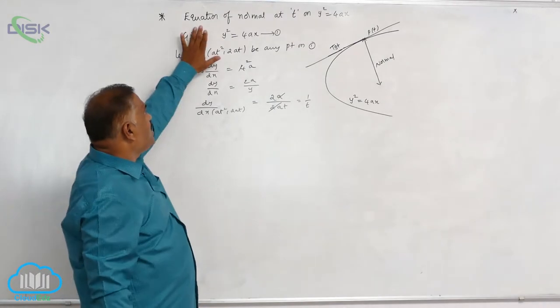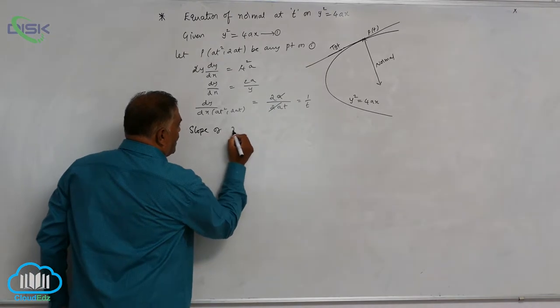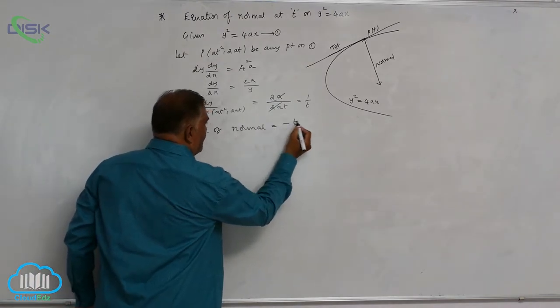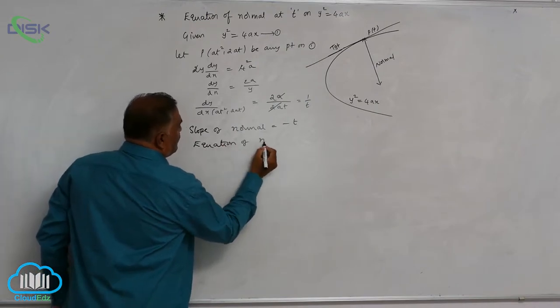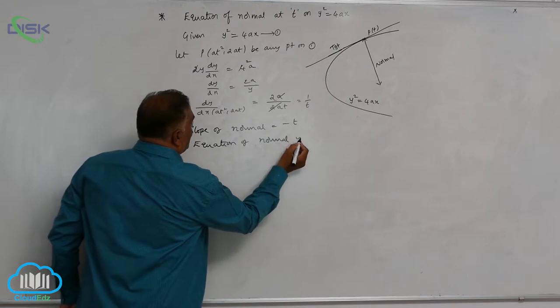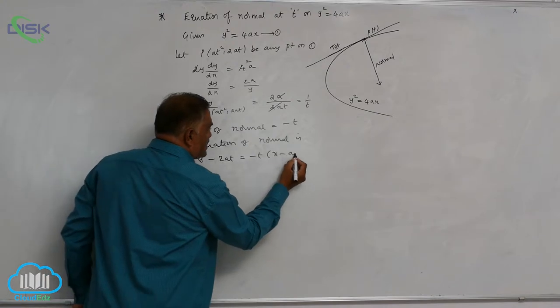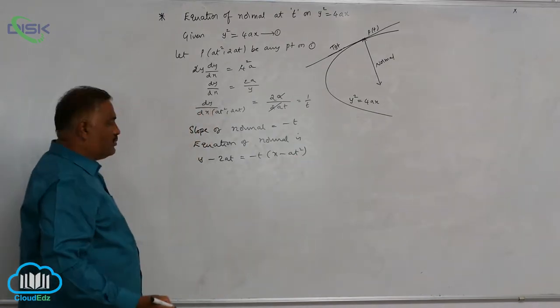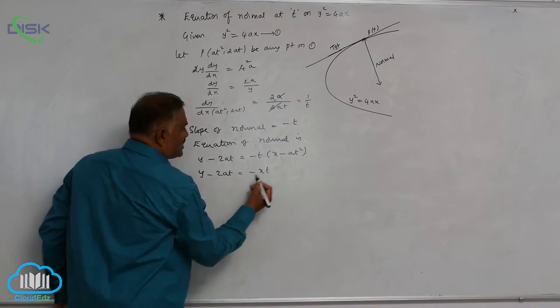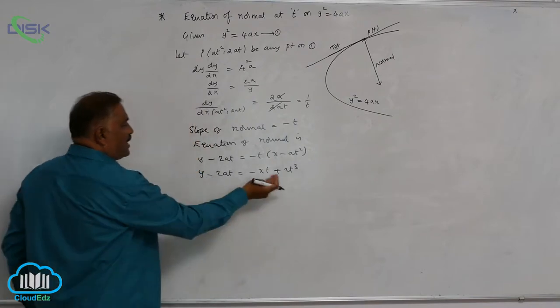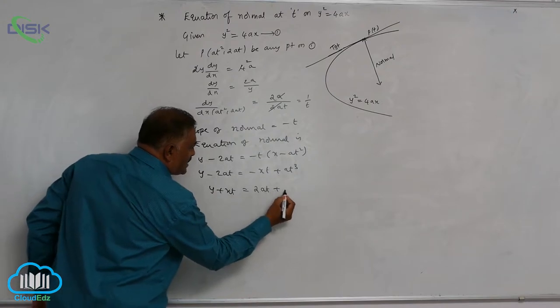But you are finding the slope of normal. So equation of normal, that means slope of normal is minus t into x minus at square. Now simplify: y minus 2at is equal to minus xt plus x minus at square. Bring all the terms to one side.